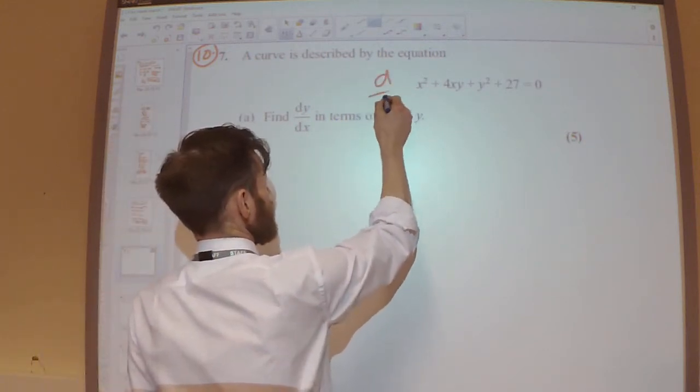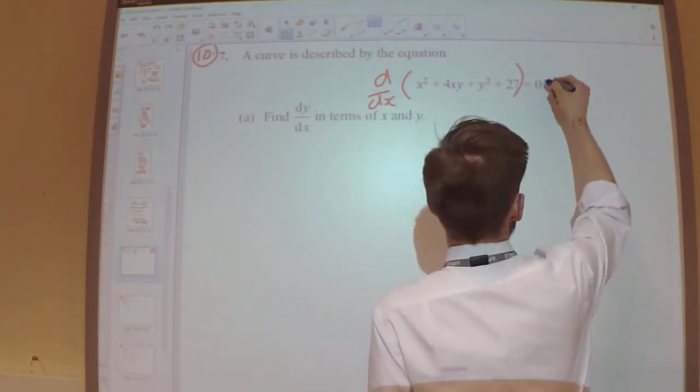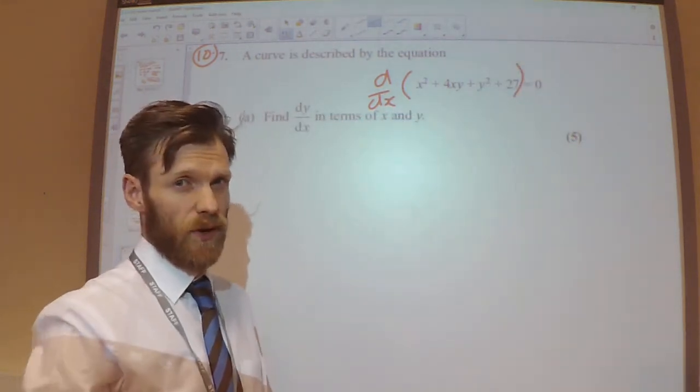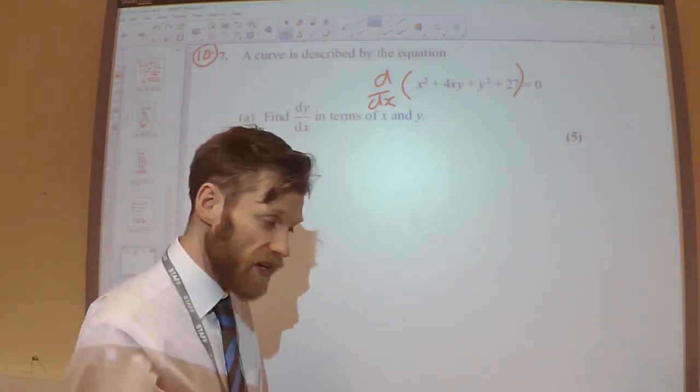we're going to write d/dx on both sides of the equation. On the right-hand side of the equation, I've got 0, and obviously differentiating that will give me 0. Really important to write that first.